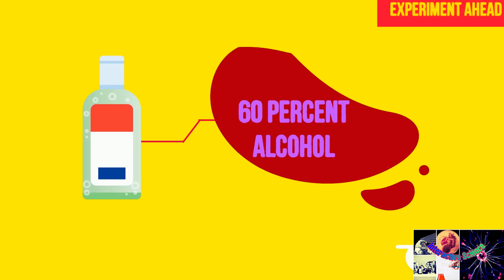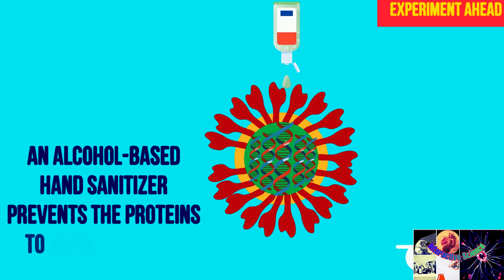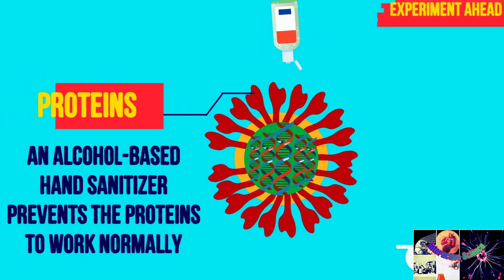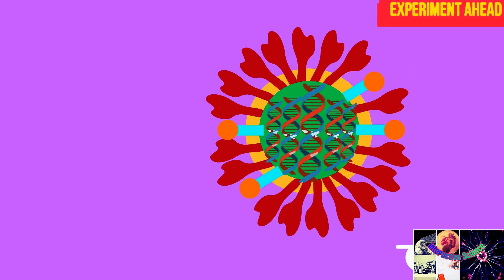For hand sanitizer to work effectively, it must be made up of at least 60% alcohol. It is thought to be that an alcohol-based hand sanitizer prevents the proteins on the virus to work normally and it also tears apart the membrane of the virus like soap.